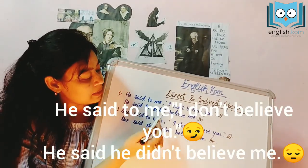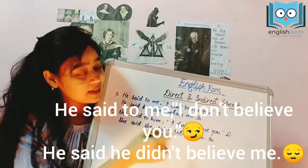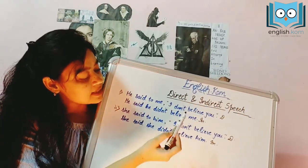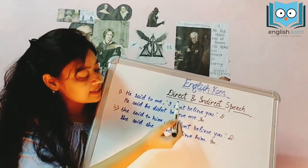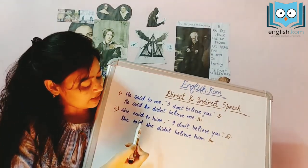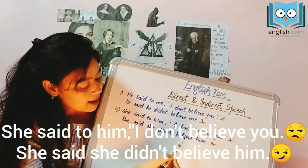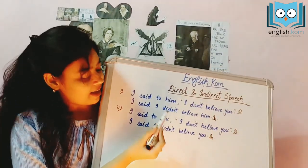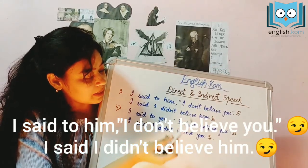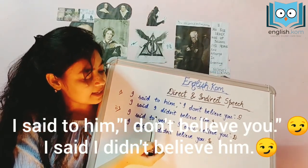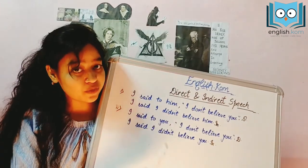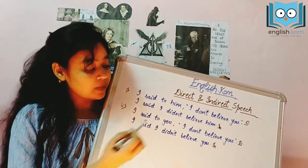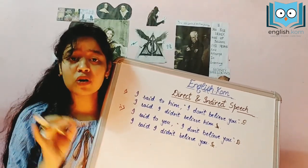For example, he said to me, 'I don't believe you.' In indirect form: he said he didn't believe me. Then, she said to him, 'I don't believe you,' becomes: she said she didn't believe him. Similarly, I said to him, 'I don't believe you,' becomes: I said I didn't believe him. The tense changes per the rules, but the main aim is to not alter the meaning.